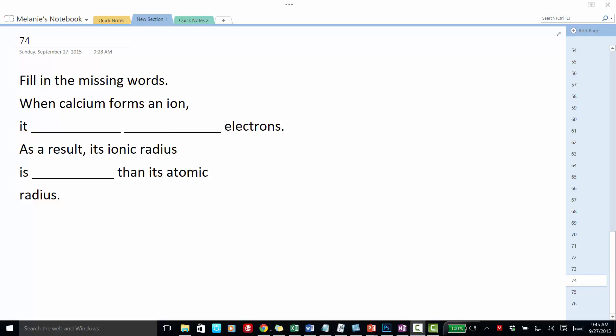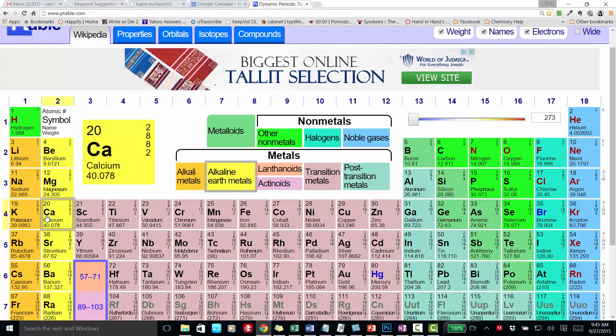When calcium forms an ion, let's look at the periodic table. Here we have calcium. Calcium is a metal, so when it forms an ion, it's going to lose electrons.